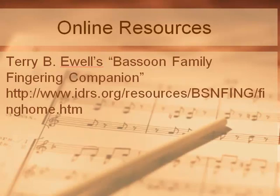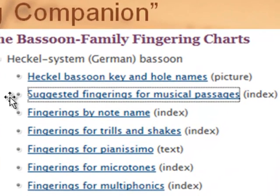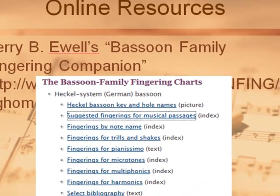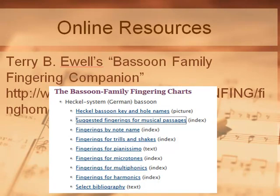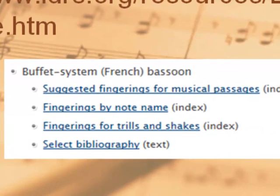I also want you to be aware that there are resources available for fingerings. I've drawn from print resources that I found — this is a project that was developed in the mid-1990s, which again drew upon the collective wisdom of many professional bassoonists. If you go to the fingering companion, you can find a section that provides bassoon family fingering charts. This is for the German bassoon, the Heckel-system bassoon. There is something called suggested fingerings for musical passages, and you will find some suggestions for Beethoven's Fourth Symphony, among others. Other online resources are also available for the French bassoon, and you can find them at the same location.